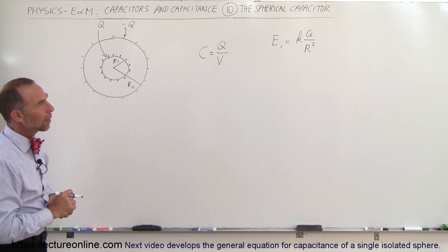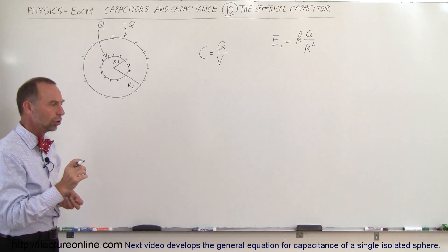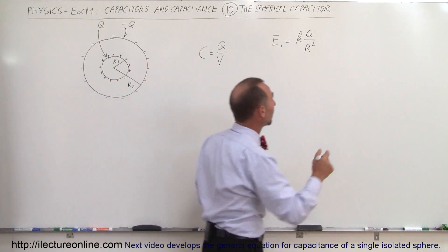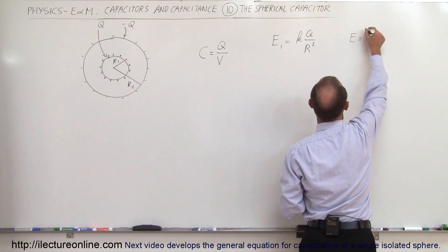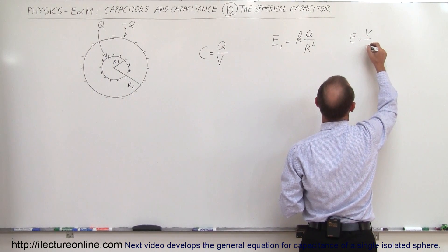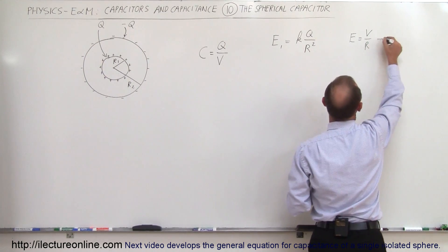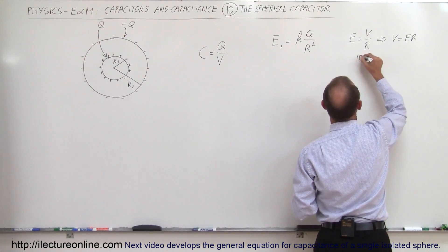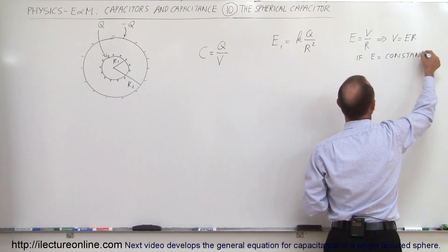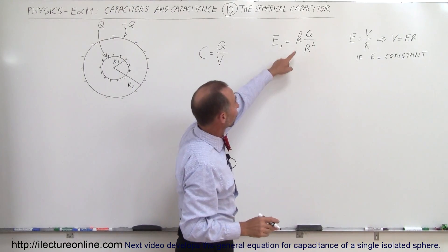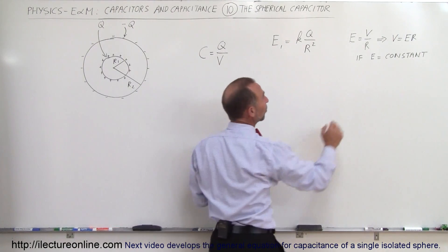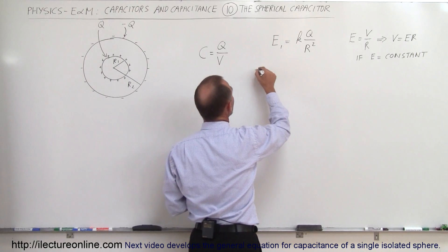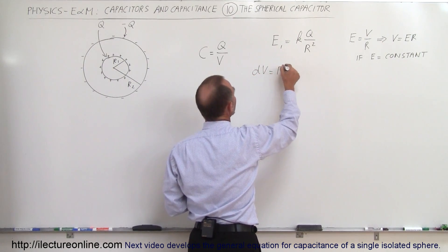Now we want to find the potential difference between R1 and R2. We'll use the relationship that the electric field is equal to V divided by the distance traveled — V divided by R — or that V is equal to E times R. However, this is only true if E is constant. In this case, the electric field is not constant; it's a function of 1 over R squared. So we write this relationship in differential form: dV is equal to E times dR.